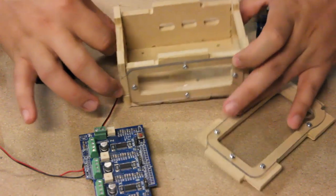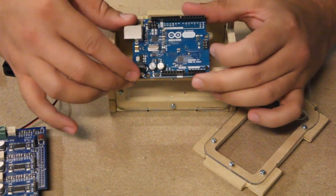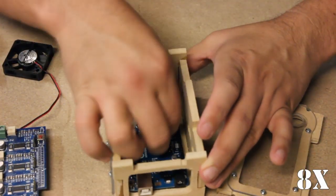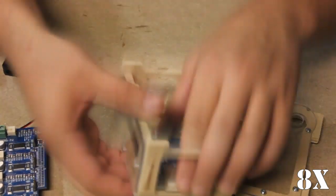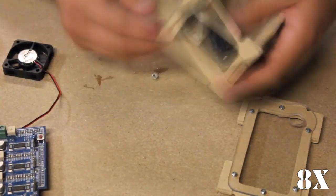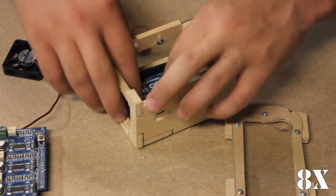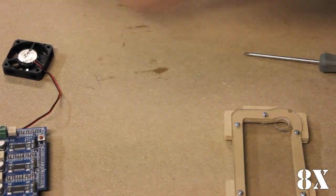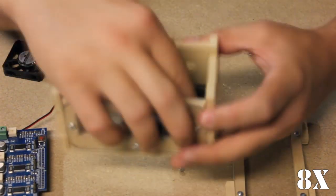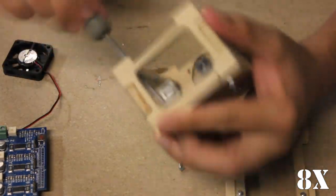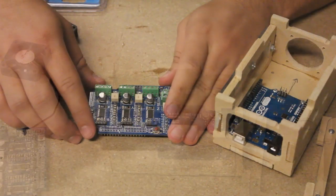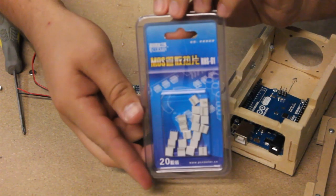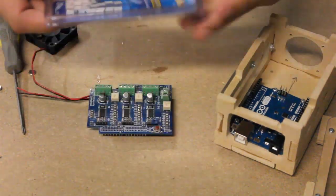First we're going to get the Arduino bolted down in position. Now before I put the motor shield on top of the Arduino, I did purchase some of these guys. These are little bitty heat sinks.